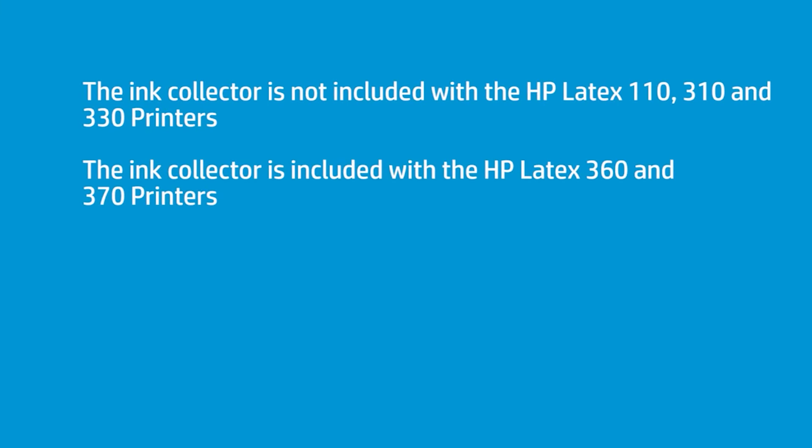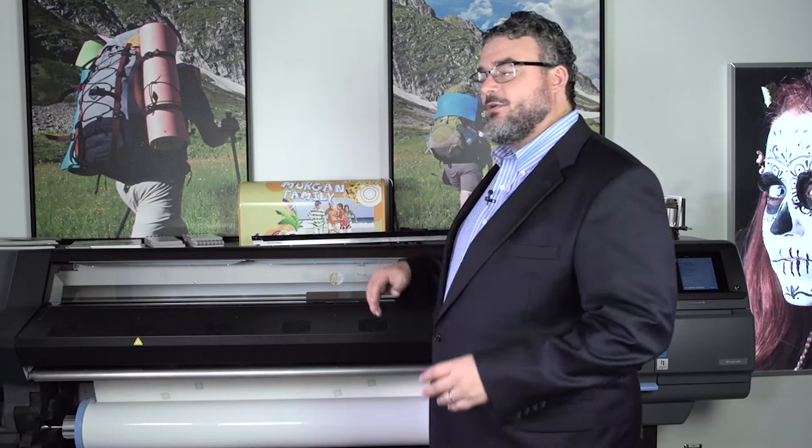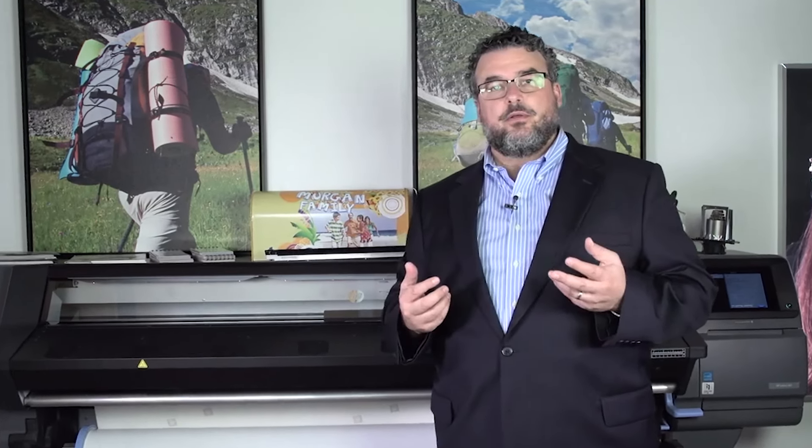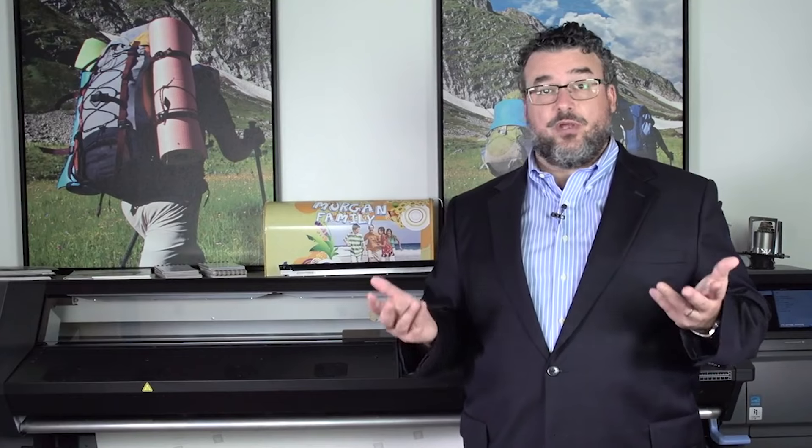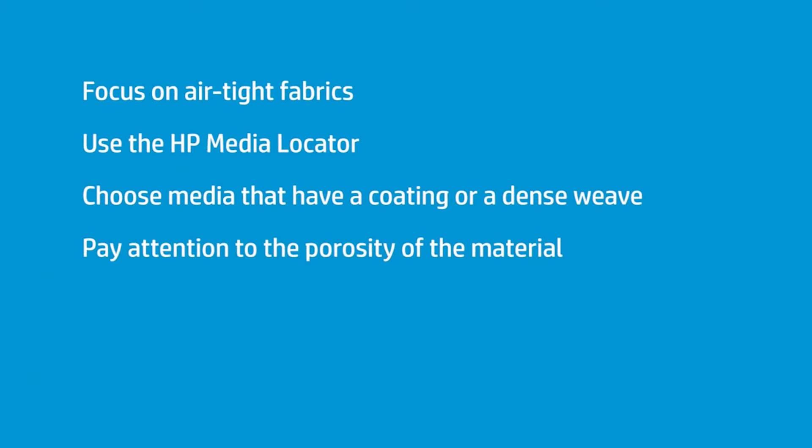Now, it doesn't mean you can't print on a lot of materials that the ink collector is ideally designed for. If you have a 330, you can print on fabrics. You just want to focus more on what we call airtight fabrics, either through coatings or through the density of the weave. Very little or no ink goes through onto the platen.